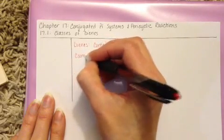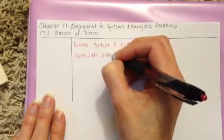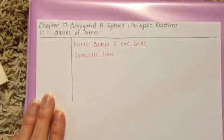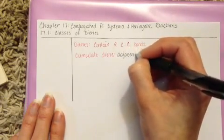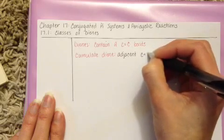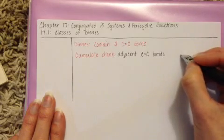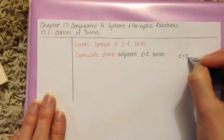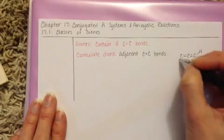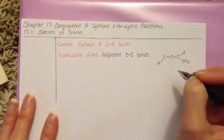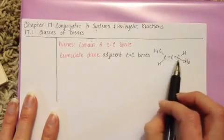The first one that we are going to talk about is the accumulated diene. Accumulated diene is a molecule that has adjacent carbon-carbon double bonds. An example of accumulated diene would be something like this, where the double bonds are side by side.